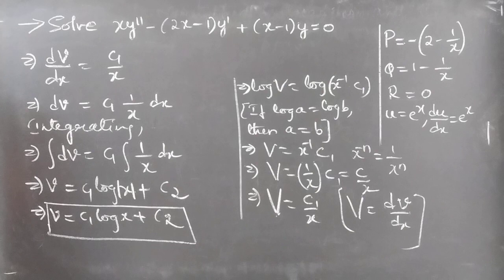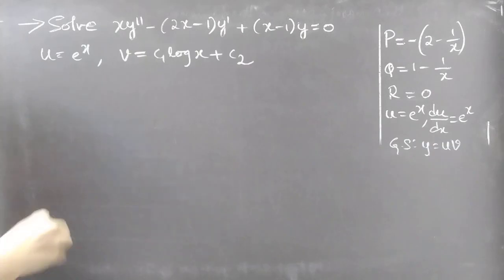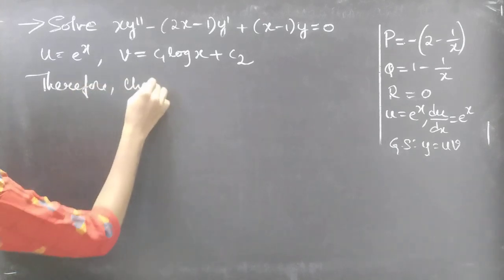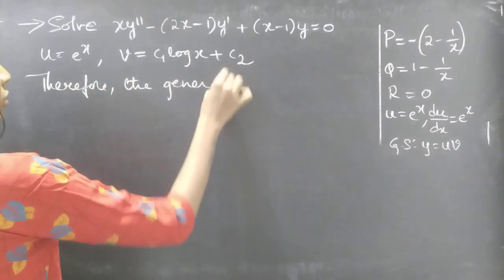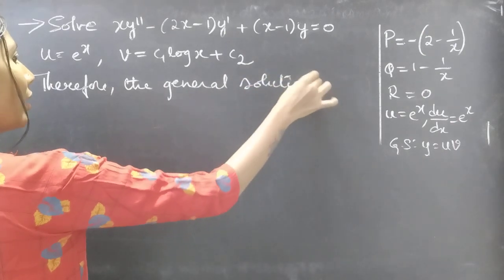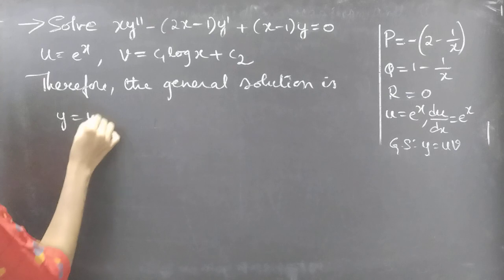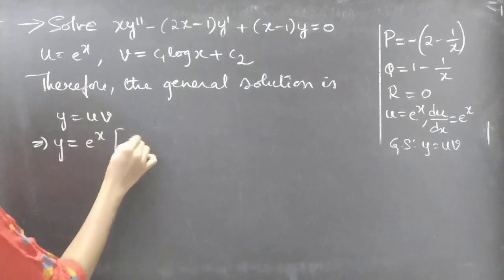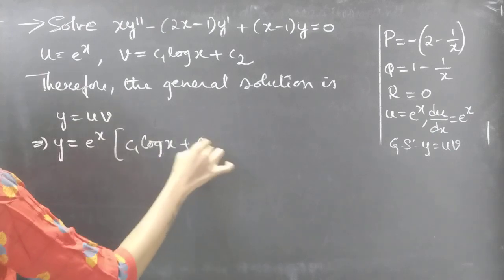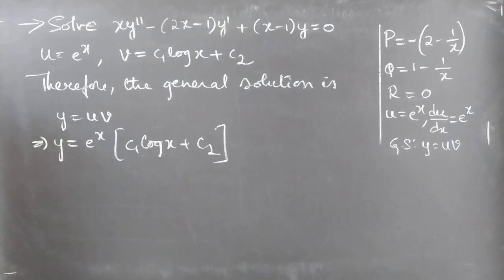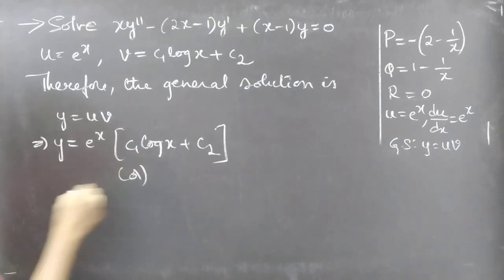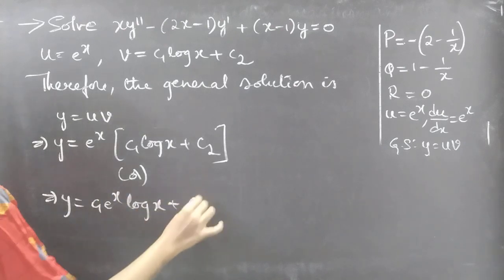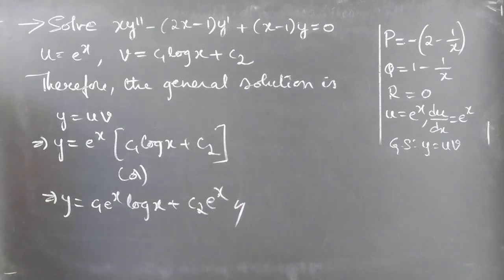Now we write the general solution. We already have u = e^x and v = c₁ log x + c₂. Therefore the general solution y = u·v gives: y = e^x·(c₁ log x + c₂), which can be written as y = c₁·e^x·log x + c₂·e^x. This is the required general solution.